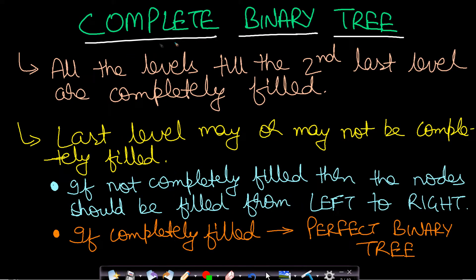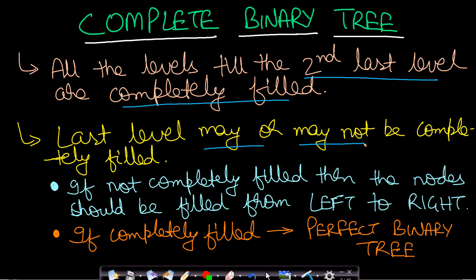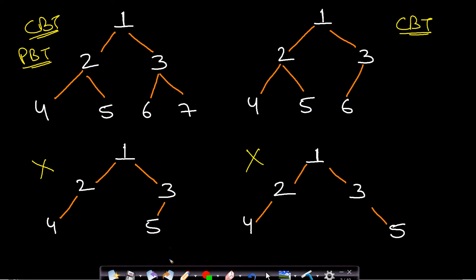In a complete binary tree, all the levels up to the second-to-last level are completely filled. The last level may or may not be completely filled; if not, nodes should be filled from left to right. If the last level is also completely filled, that type of complete binary tree is also known as a perfect binary tree.